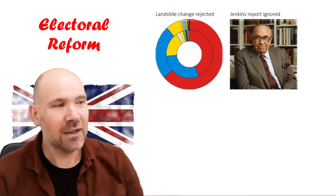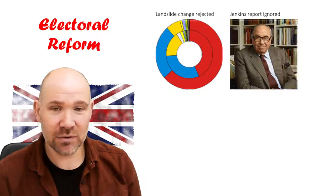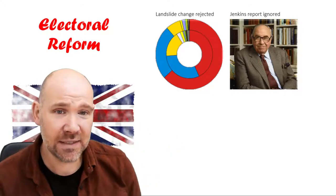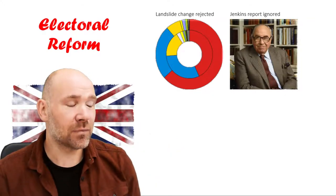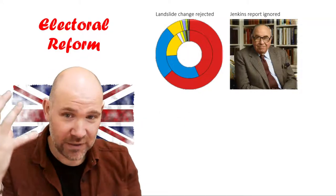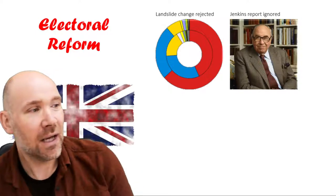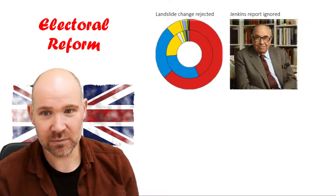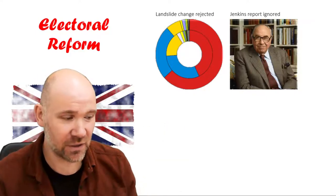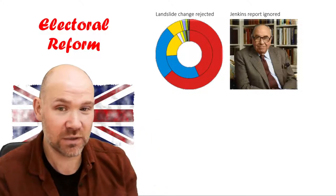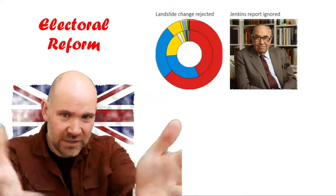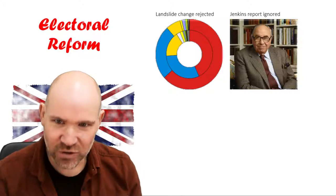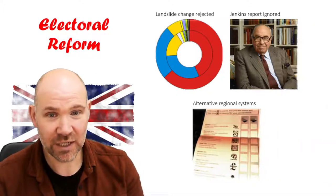Tony Blair kicked the can down the road by sending a man called Roy Jenkins off to make a report. Roy Jenkins is actually a very important figure in British politics in the 60s, 70s and 80s. He was asked to make a report about what the electoral system should be changed to. He went off, did lots of research, and actually invented a brand new electoral system called AV+. He brought it back saying this was the perfect system for Britain. And that's the last we ever heard of it, because they ignored it. This constitutional change never happened.